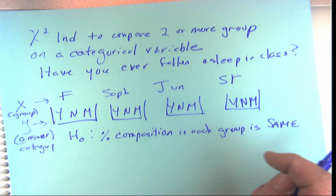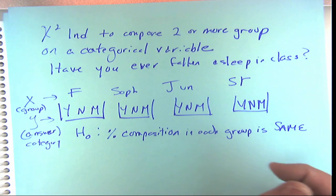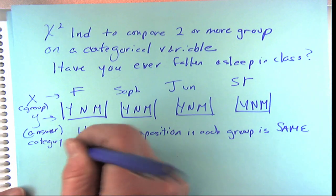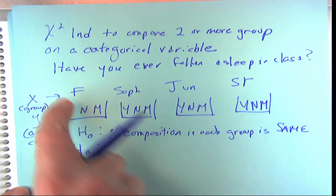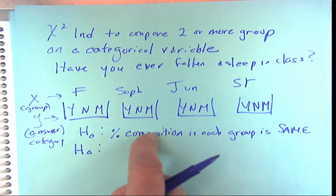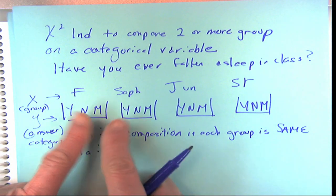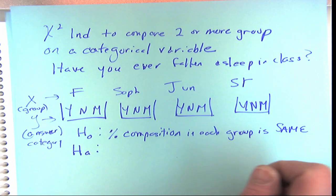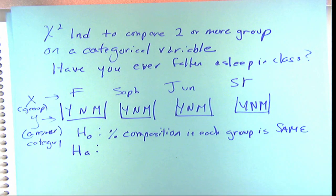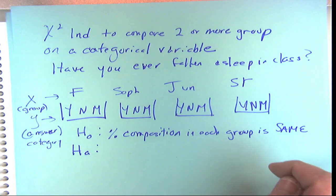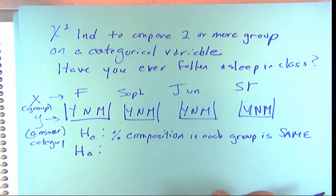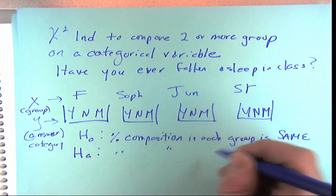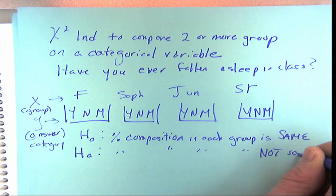When you do that contingency table and compute expected counts using row total times column total over overall total, you're saying those percent compositions in each group category are the same under the null. The alternative is that knowing someone's year in school does tell you something — beyond chance — about their answers. For example, upperclassmen might fall asleep more.